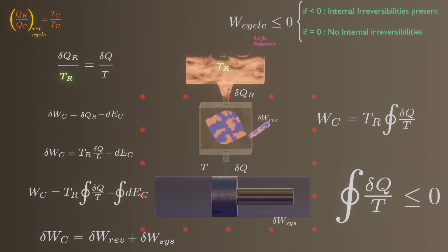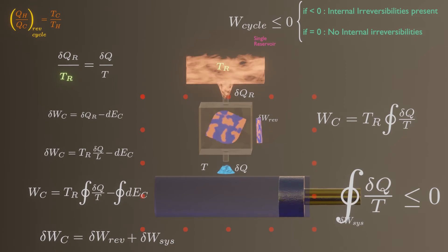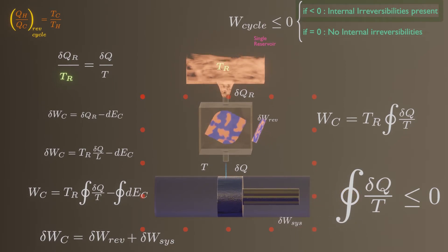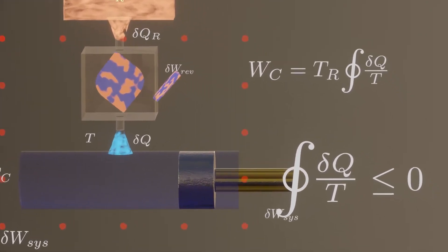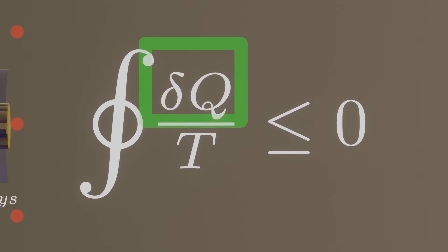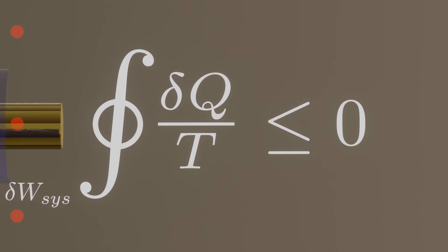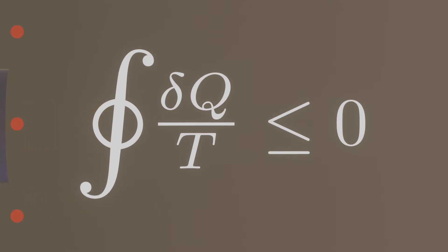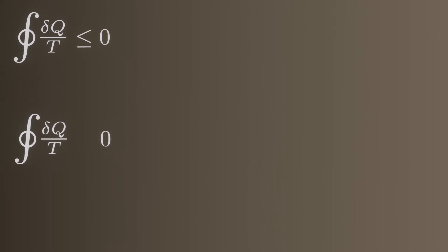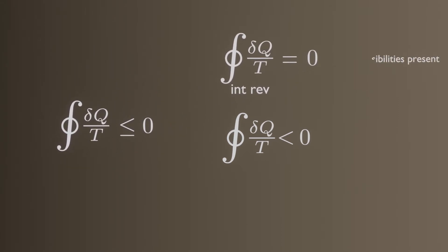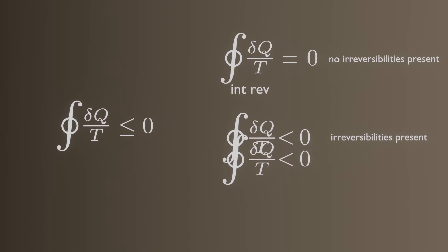This is the Clausius inequality. This inequality is valid for all thermodynamic cycles — reversible or irreversible — including refrigeration cycles. Here, δQ represents the heat transfer at a part of the system boundary during a portion of the cycle, and T is the absolute temperature at that part of the boundary. The integral is performed over all parts of the boundary and over the entire cycle. The equality applies when there are no internal irreversibilities, and the inequality applies when internal irreversibilities are present. If the closed integral is zero, no irreversibility is present; if negative, irreversibility is present; and becoming positive is impossible.